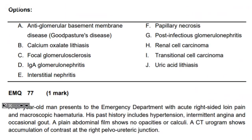Practice question: An older male presents to ED with acute right-sided loin pain and microscopic hematuria. Past history includes hypertension, intermittent angina, and occasional gout. Plain abdominal film shows no opacities or calculi. CT urogram shows accumulation of contrast at the right PUJ. Answer: uric acid stone — the gout history and the fact that it's not visible on plain X-ray point to uric acid.